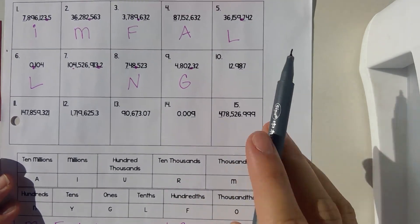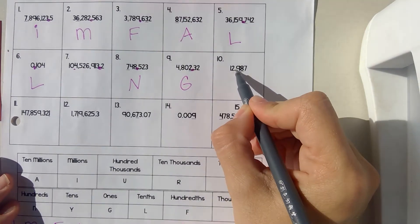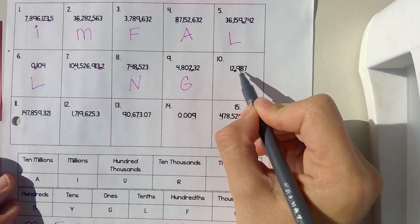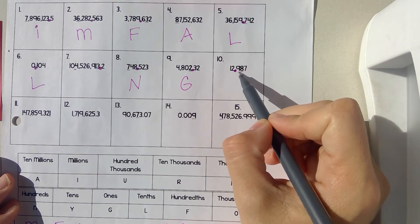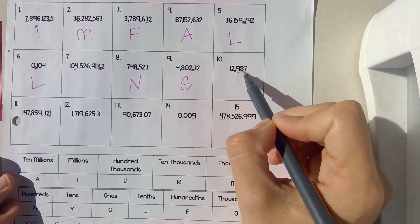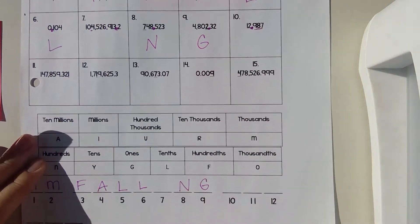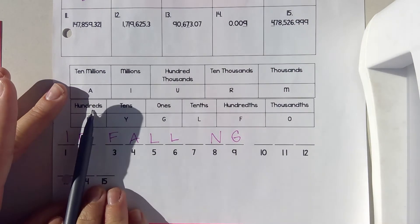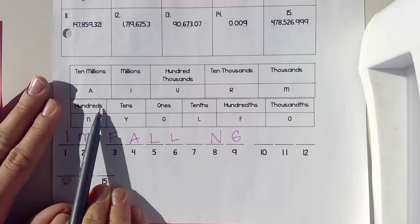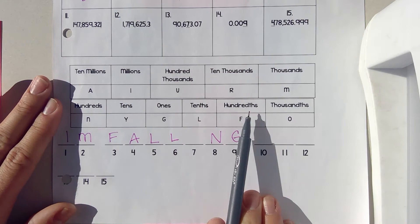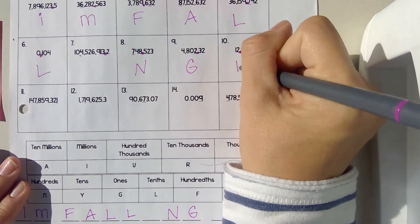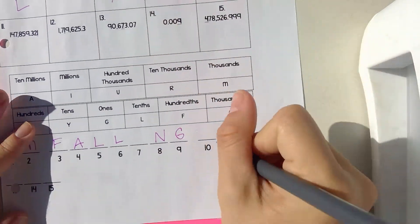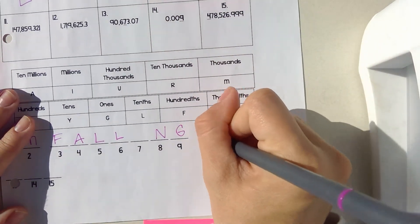Number ten — this is decimals. So this would be tenths, hundredths. Saying hundreds would be incorrect because it does not have a TH. It's hundredths, which is F. Number ten is F.